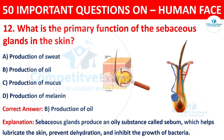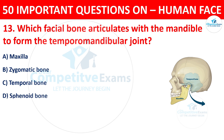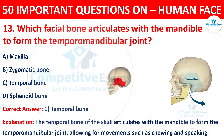Question number thirteen: which facial bone articulates with the mandible to form the temporomandibular joint? The options are maxilla, zygomatic bone, temporal bone, or sphenoid bone. The correct answer is C, temporal bone. The temporal bone of the skull articulates with the mandible to form the temporomandibular joint, allowing for movements such as chewing and speaking.